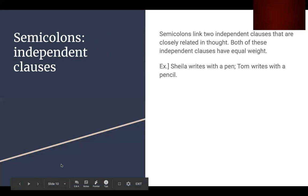Now, we're going to move on to the semicolons for independent clauses. These semicolons link two independent clauses, which means they stand by themselves, that are closely related. Both of these independent clauses should have equal weight. For example, Sheila writes with a pen, Tom writes with a pencil. When we use a semicolon, we give both of these phrases equal weight. We know Sheila likes to write with a pen, and Tom likes to write with a pencil.